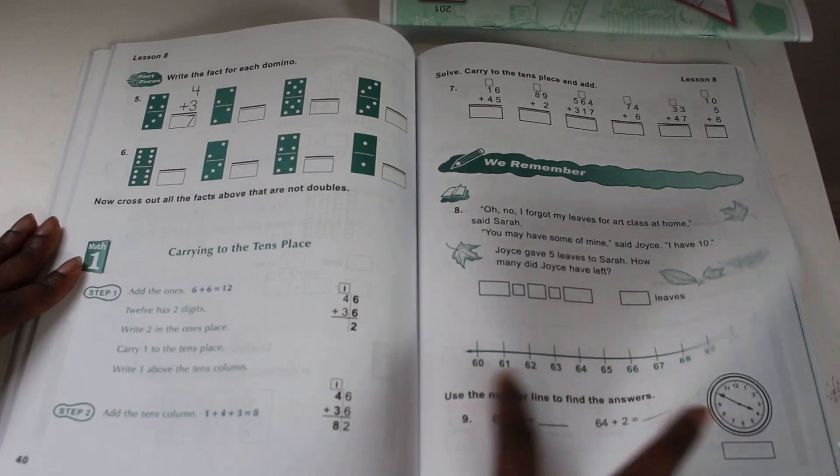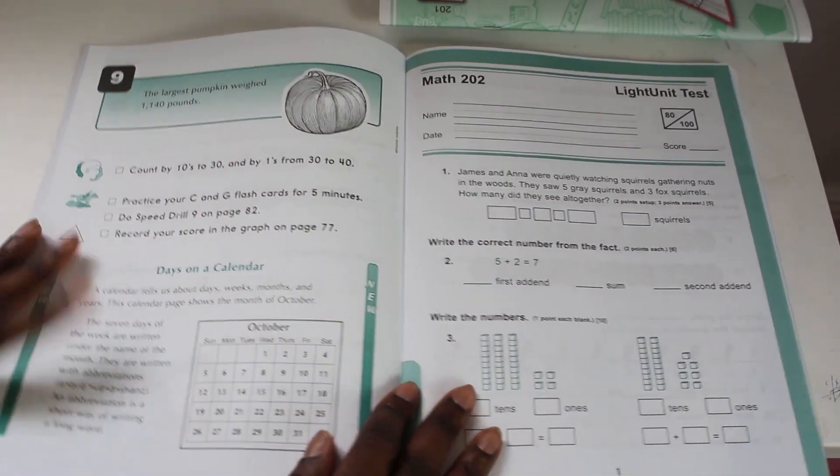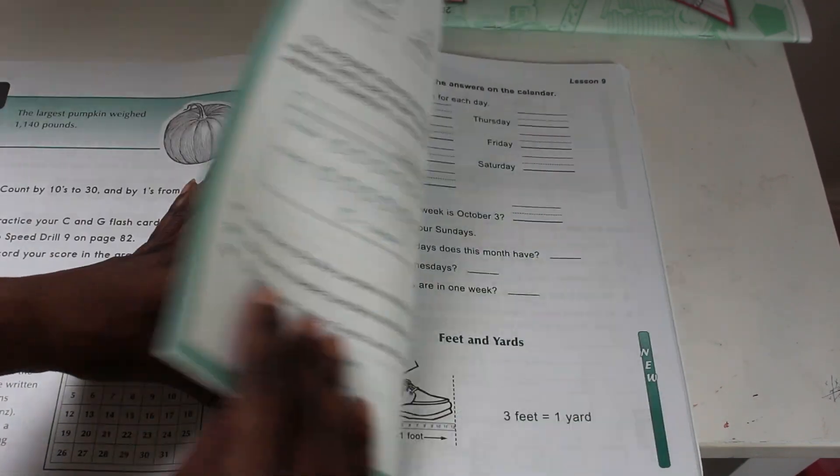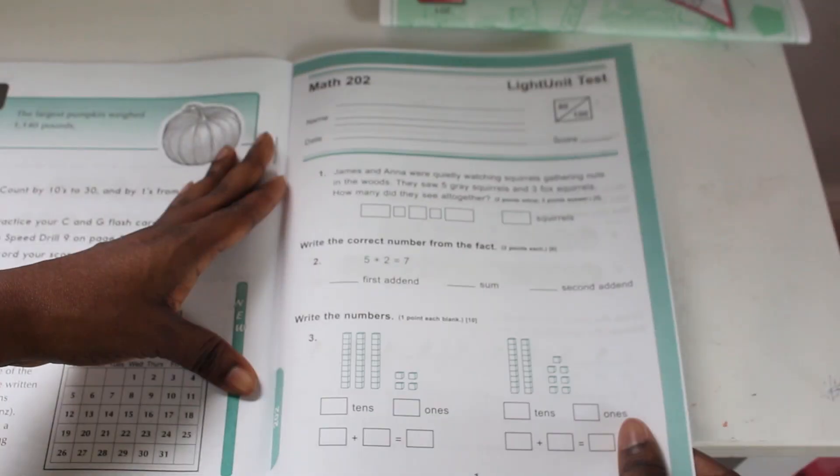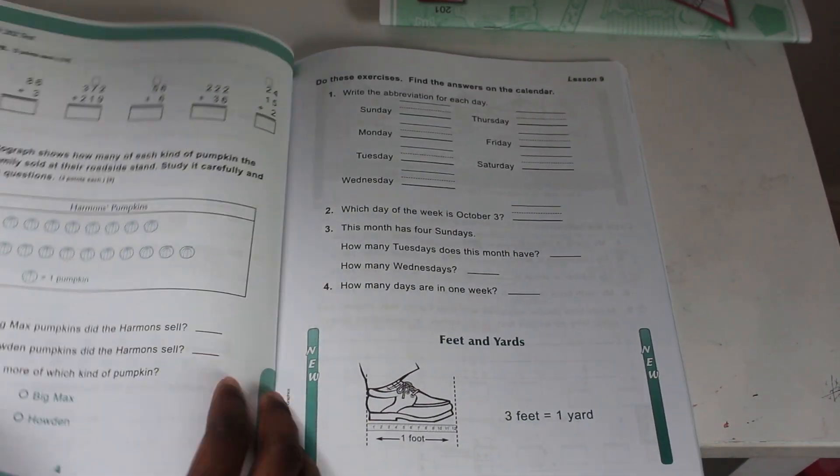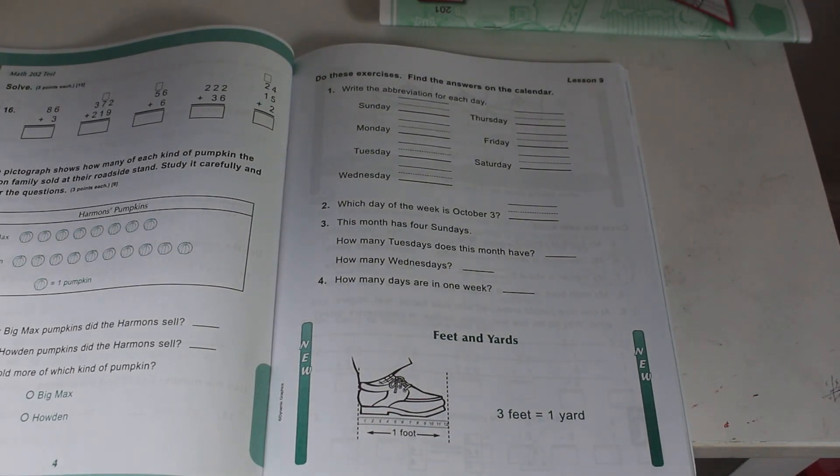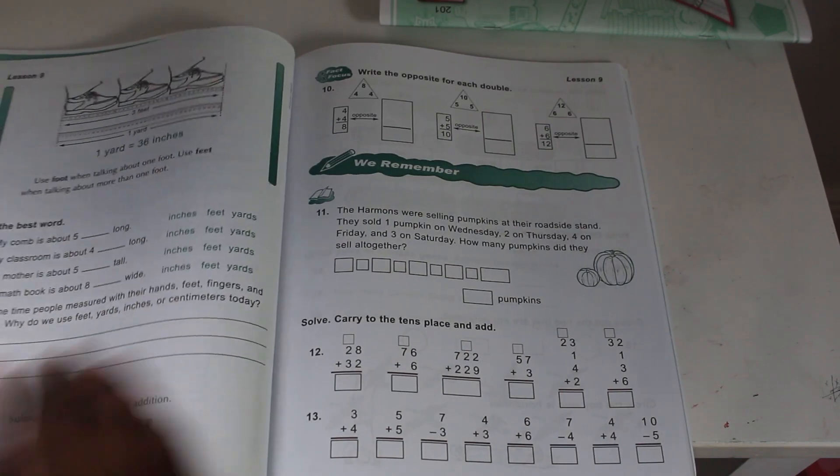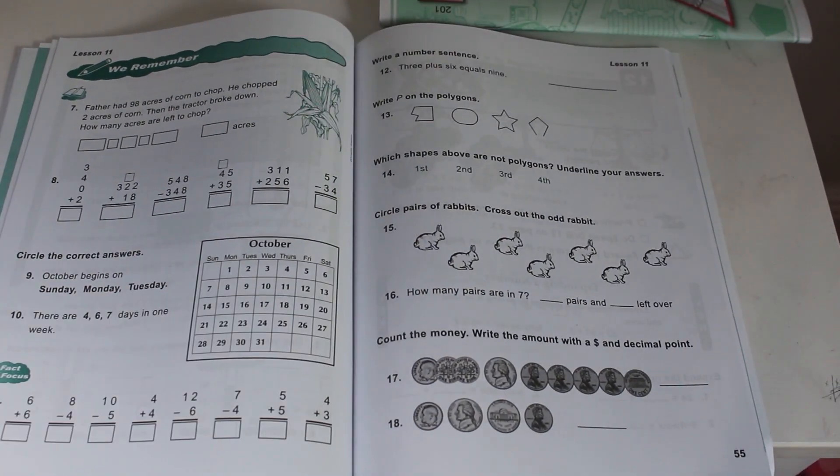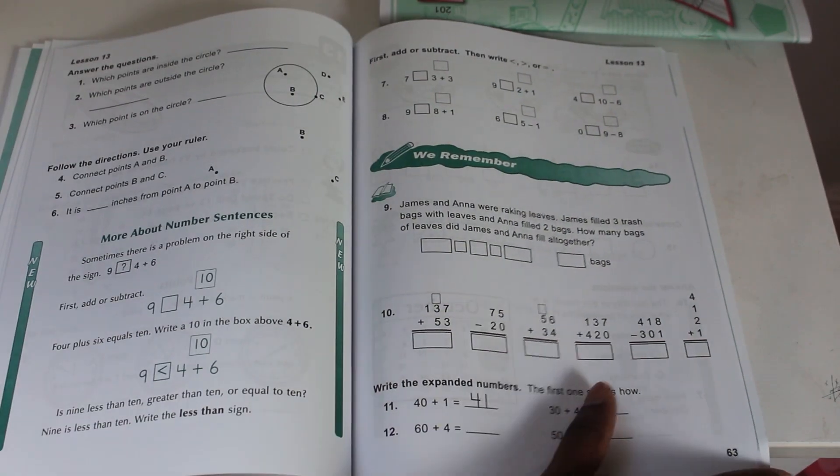Also goes over number placements, place values. So once you get to the center, you will see the light unit test. And the light unit test, you actually rip it out, you tear it out, and then they do it at the end.